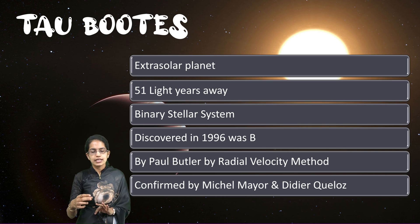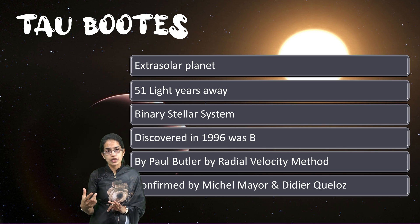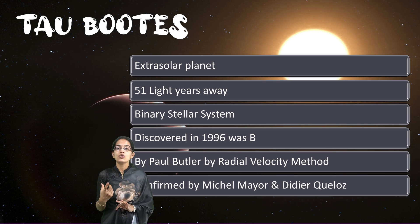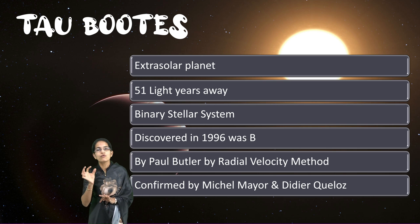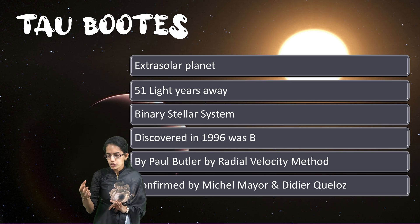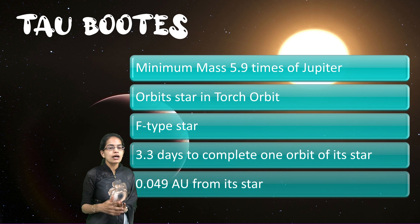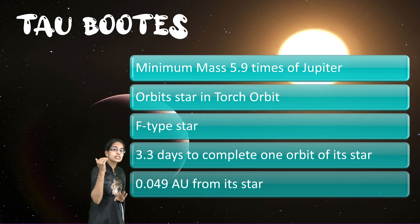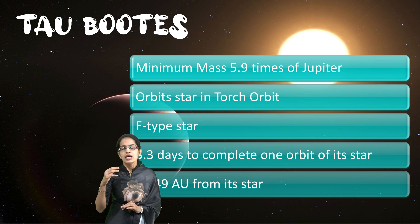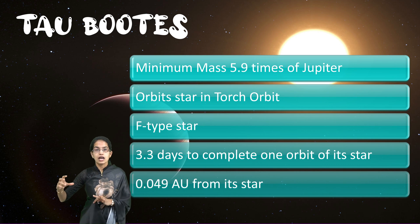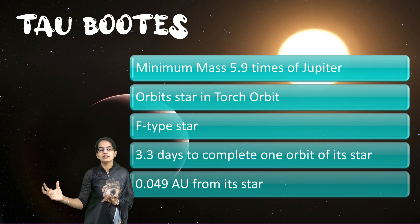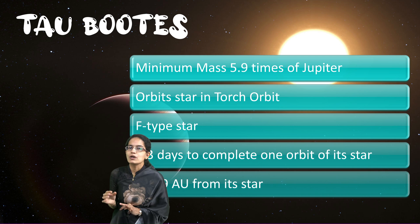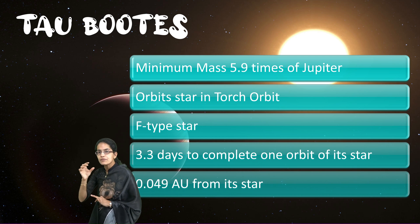This discovery was later confirmed by Mayor and Queloz, and the whole method was based on the LOFAR technique — Low Frequency Array — which we would talk about in a while. Tau Boötis is interesting because it has a minimum mass which is nearly six times that of Jupiter. The two stars are maintained in an orbit, and it is a torch orbit which is maintained.